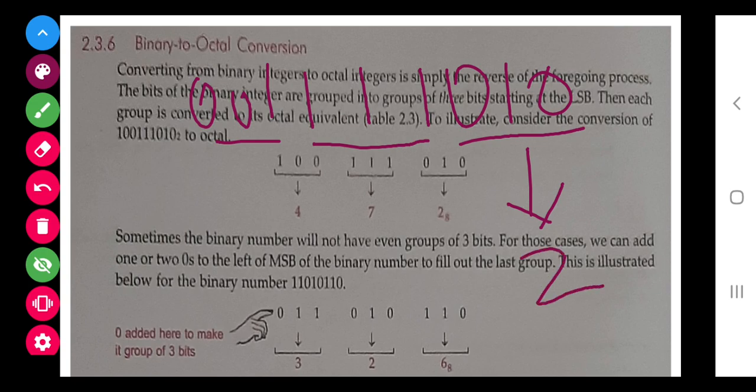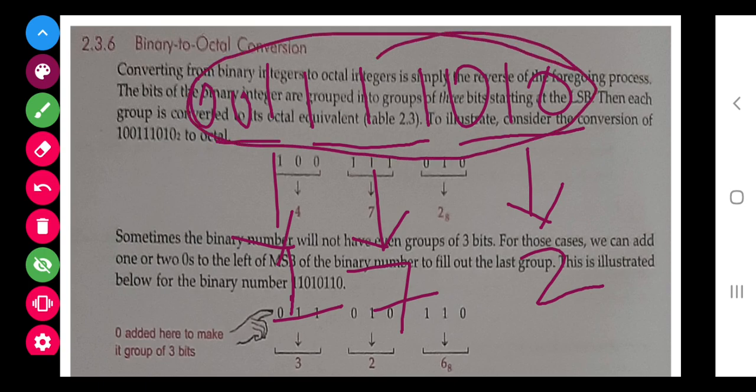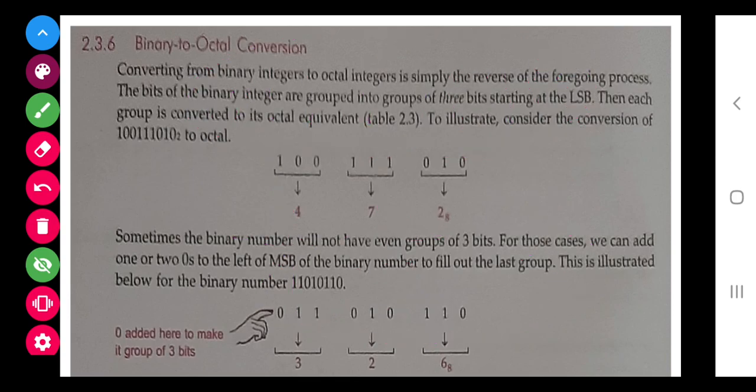Now I will convert this into a decimal number. The decimal number of 010 is 2, that we have learned in how to convert binary into decimal. The decimal number of this is 7, and the decimal number of 011 is 1 only. So this is converted into 172 in octal.